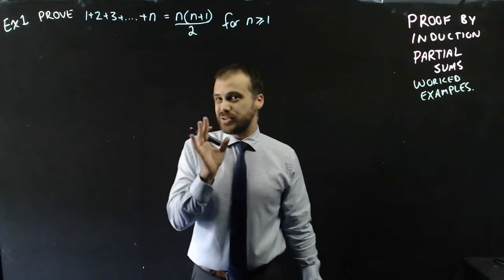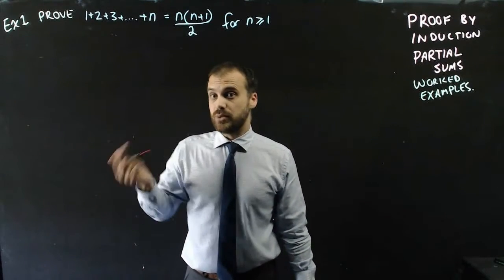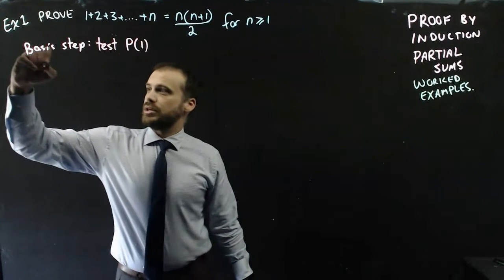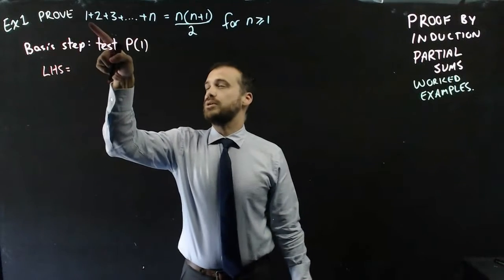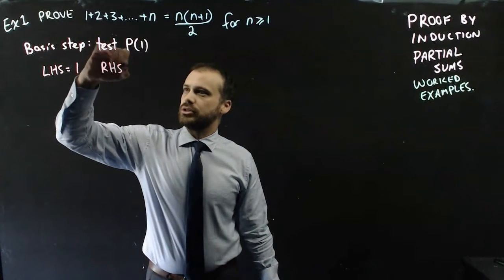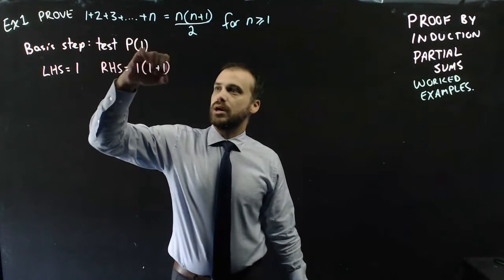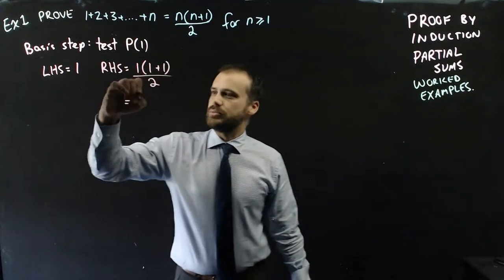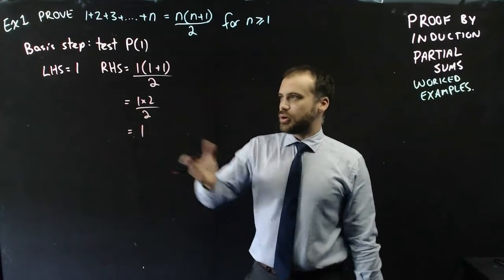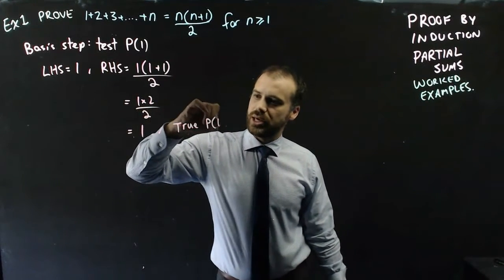Our first step is the basis step — we test whether this works for the first value, n equals 1. This is called proposition P(n), and we're testing P(1). The left-hand side is just 1. The right-hand side is 1 times (1+1) over 2, which equals 1 times 2 over 2, which equals 1. Left-hand side equals right-hand side, so it is true for P(1).